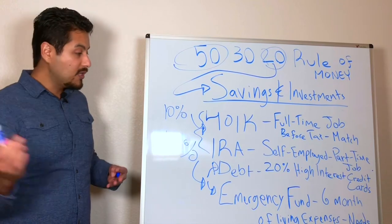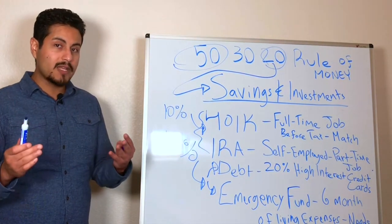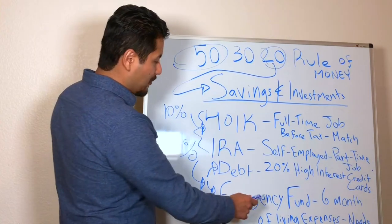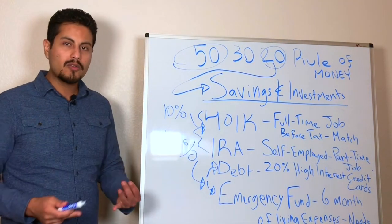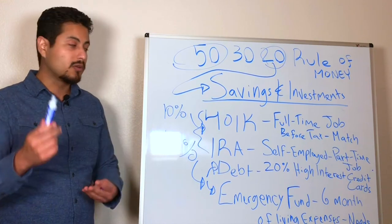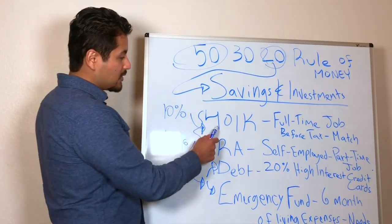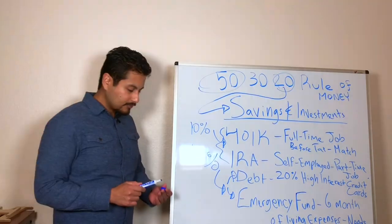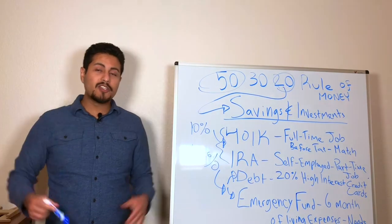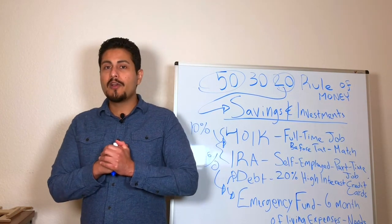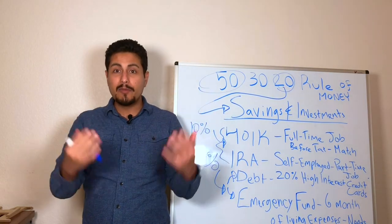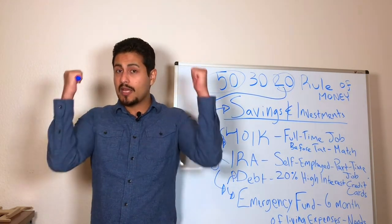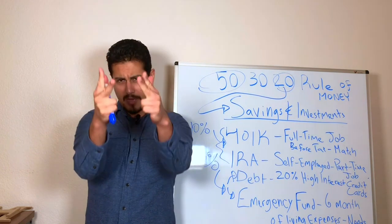Now once you have six months of living expenses or more, then you should be using that extra money to pay down other debt like car loans, mortgage, or even student loans. Or you could increase your 401k contribution. Alright guys, that's pretty much it guys. I hope you guys learned something from this video. If you liked this video, if you learned something, please subscribe. Make some comments, let me know what you guys think. And until the next one guys, take care. Thank you very much guys. Bye.